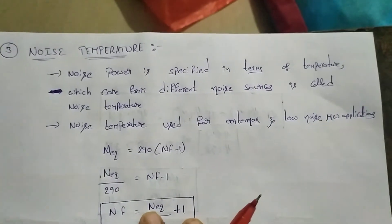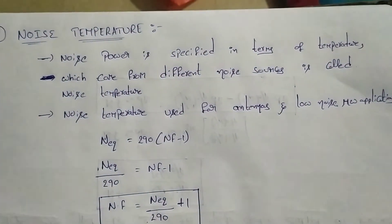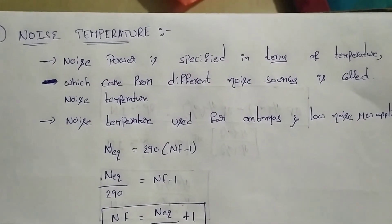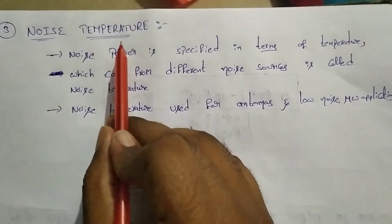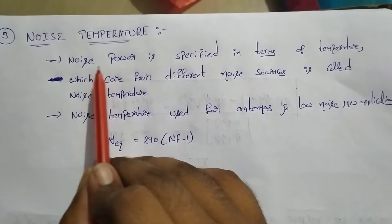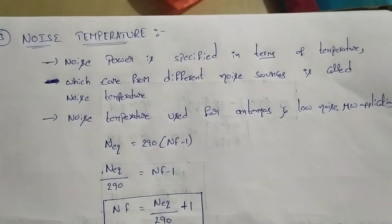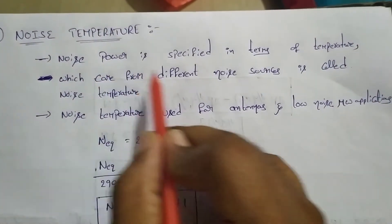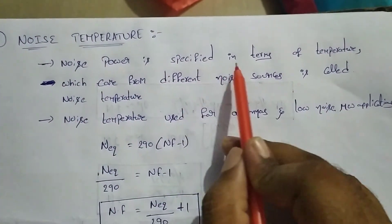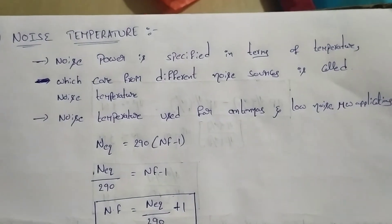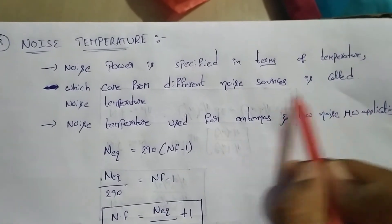The last definition is Noise Temperature. Noise power is specified in terms of temperature. The temperature is calculated based on which noise came from different noise sources, and this is called noise temperature.